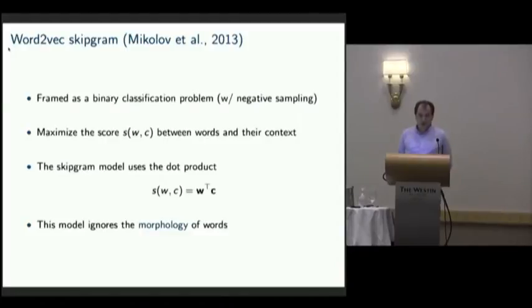Our work is an extension of the Word2Vec skip-gram model. It's framed as a binary classification problem, where the goal is to predict whether two words will co-occur or not. The skip-gram model uses a simple scoring function, which is just the dot product between the vector representation of W and the vector representation of the context word C.